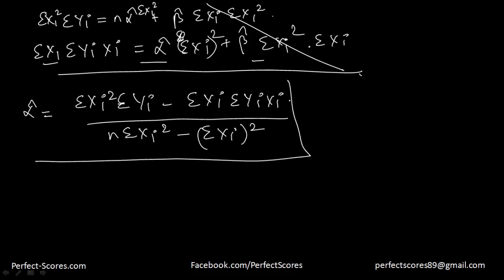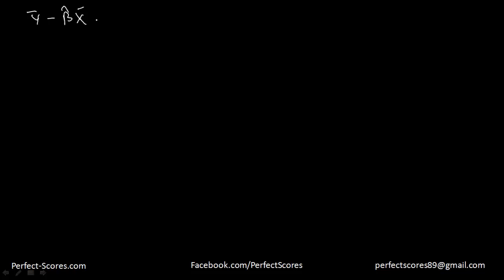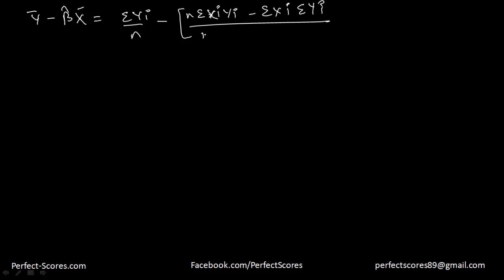Now let's try to find the value of alpha hat in terms of beta hat. Beta hat is equal to n into summation of x_i y_i minus summation of x_i into summation of y_i, divided by n times summation of x_i squared minus summation of x_i whole squared. I'm going to do a little bit of reverse engineering from here. I'm going to start with y_bar minus beta hat into x_bar, which is going to be summation of y_i divided by n, minus beta hat — whose value is n into summation of x_i y_i minus summation of x_i into summation of y_i, divided by n times summation of x_i squared minus summation of x_i whole squared — multiplied by x_bar, which is summation of x_i divided by n.